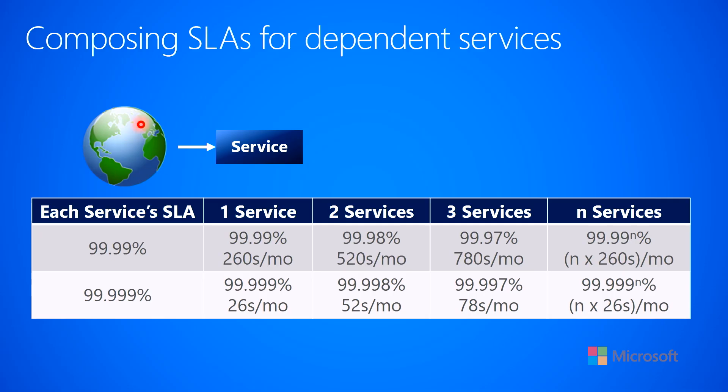Another thing to consider when you are breaking a monolith into different services is the service level agreements when you're composing services that have dependencies between each other. That's what I talk about on this slide here. You have your customers that are sitting on the planet and they're trying to make network requests into your service. If you are offering a 99.99% uptime for your service level agreement, that really equates to your service being down no more than 260 seconds per month.